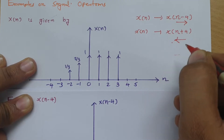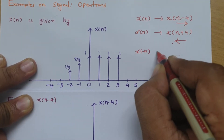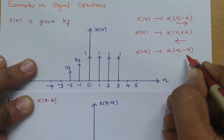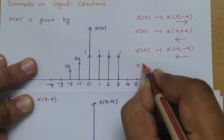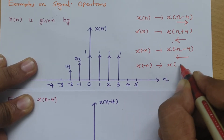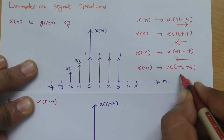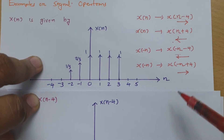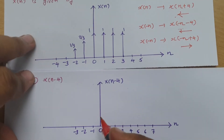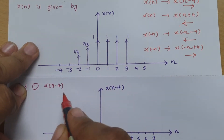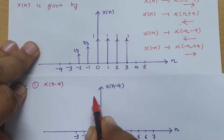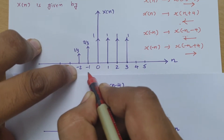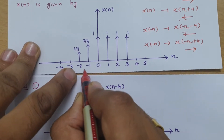If you have x(-n) and do a shifting operation like x(-n-4), you move the graph to the left. If you have x(-n) and do x(-n+4), you move the graph to the right. So x(n-4) means we shift the graph to the right by 4 positions. For example, the value at -2 needs to jump 4 positions to the right.